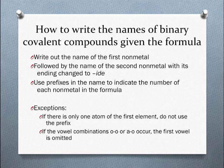So how do you take the formula of a binary covalent compound and turn it into the name? First, write out the name of the first element in the compound, then write out the second. Change the ending of the second nonmetal to '-ide.' For covalent compounds, you have to use Greek prefixes to indicate the number of each nonmetal in the formula.